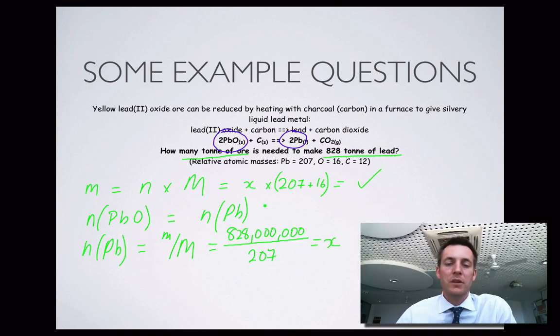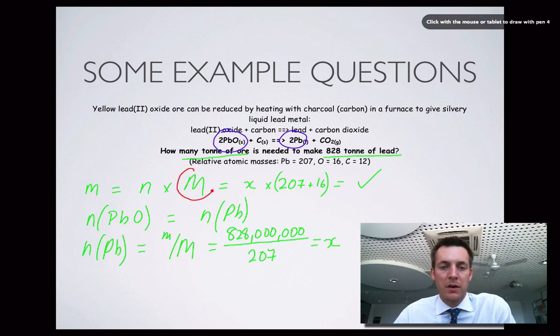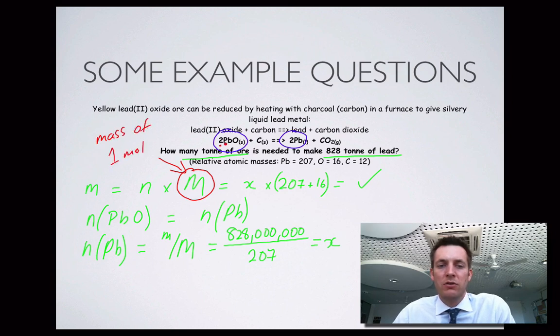Just before we finish, some people make the mistake - let's get my red pen - the molar mass. They go, well, isn't that two times 207 plus 16 because there's a two here? Just remember what this is. This is the mass of one mole. If you go chucking in these twos, then you're finding the mass of two moles. So this should always be, when you're calculating the molar mass, it should always ignore the number before it. Just a little tip there.